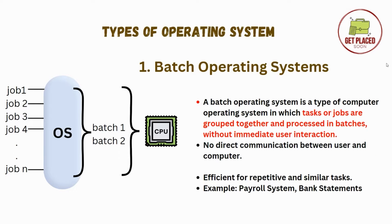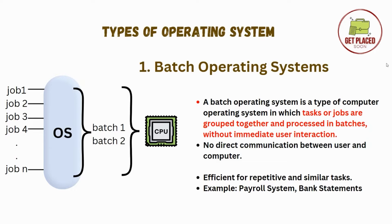The first operating system we're going to discuss is batch operating system. In this type of OS, the jobs are grouped together and processed in batches. Each job generally consists of a set of instructions and data. This operating system loads the jobs and groups them into batches. Whenever there are similar jobs available, all these similar jobs will go into one batch.